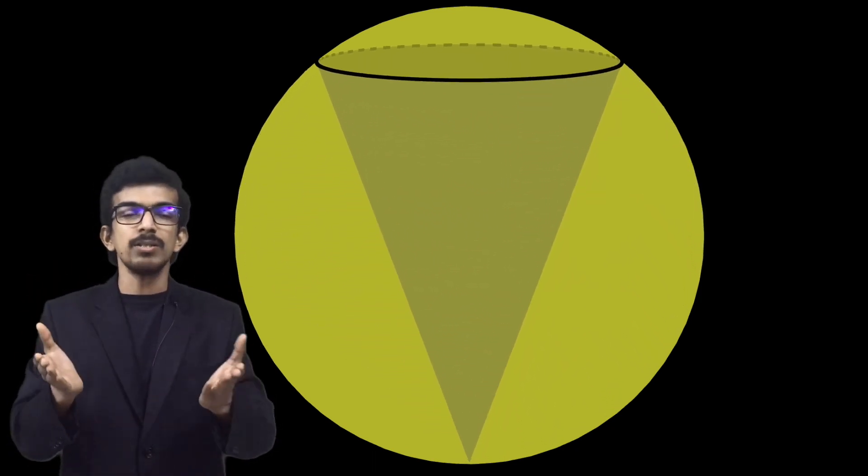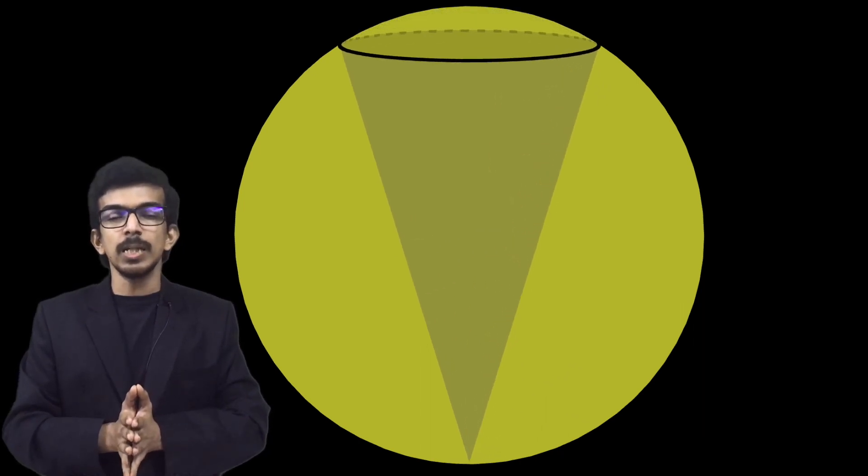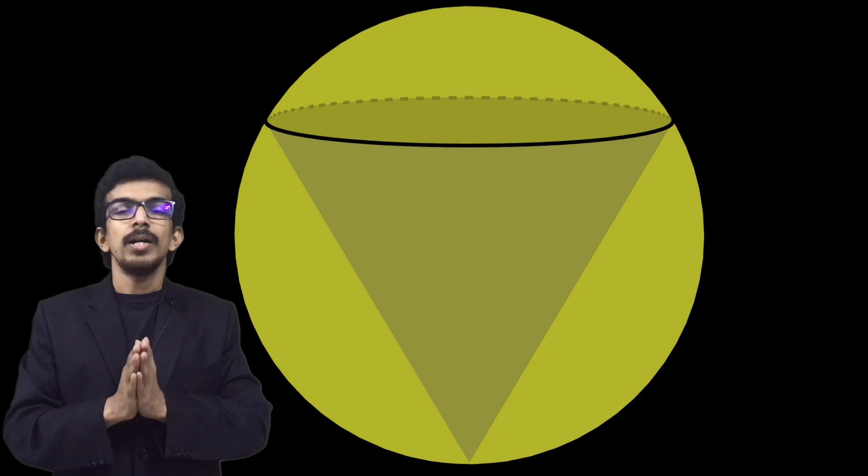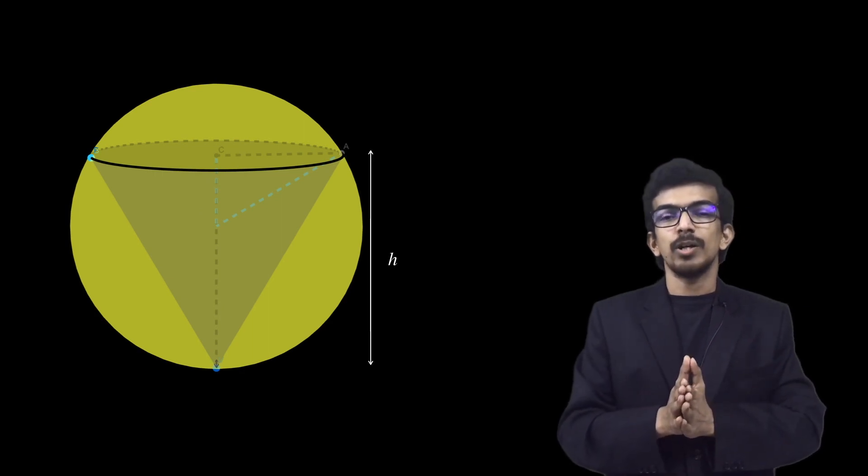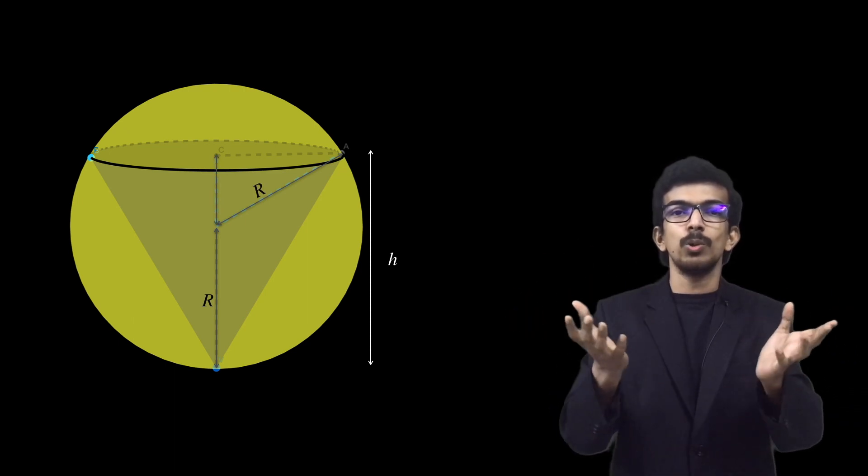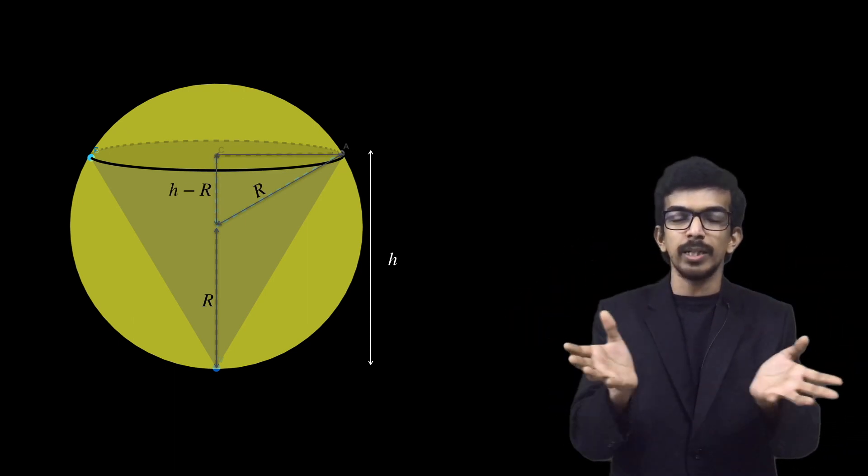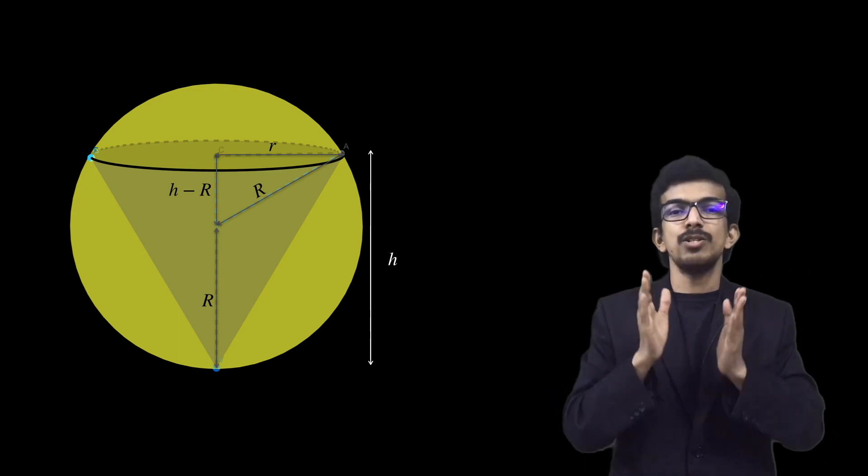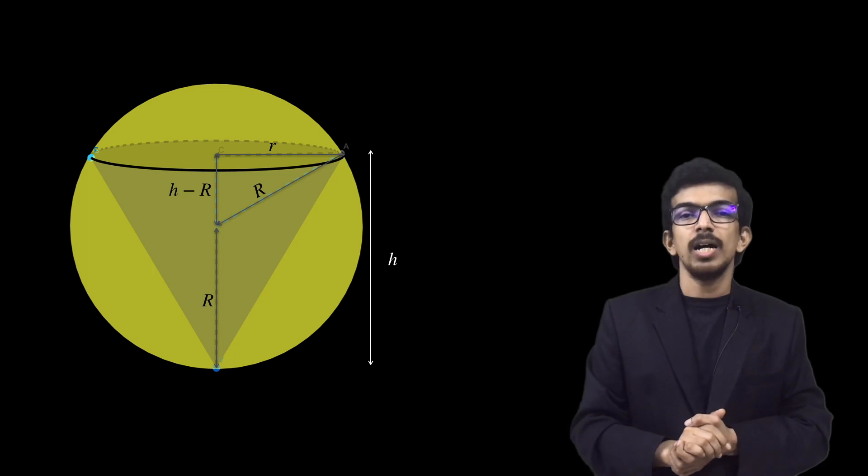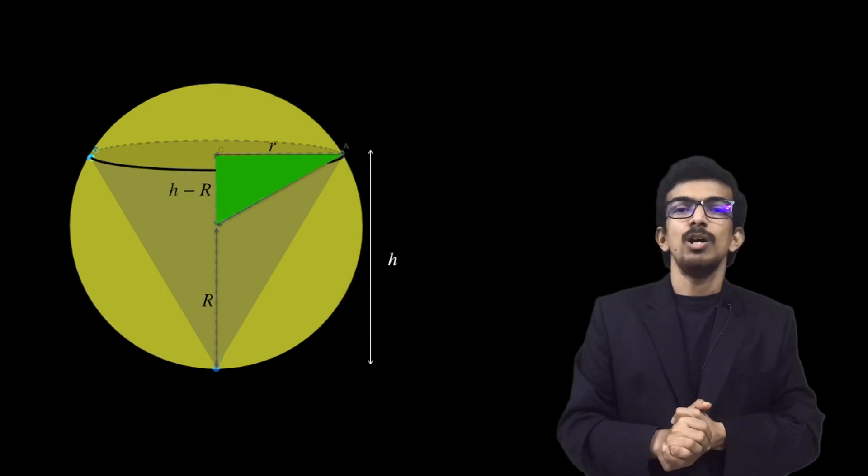Now let us try to see that particular situation where the volume is maximum and let's try to find the maximum volume. We have a sphere of a fixed radius R, and let us inscribe the cone and assume that the cone has the maximum volume at this particular position. The height of the cone is h and you can see that we have a right angle triangle formed.